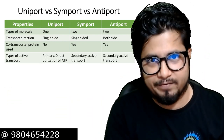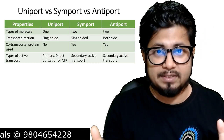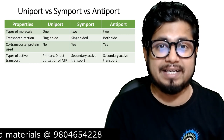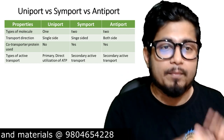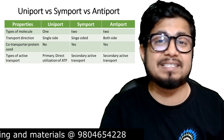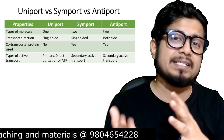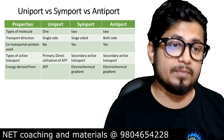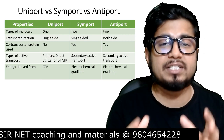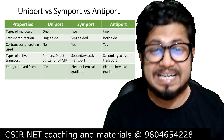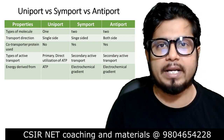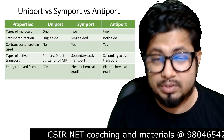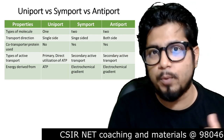Then comes the type of active transport. There are two types: primary and secondary. Uniport utilizes direct ATP, so it is under primary active transport. But symport and antiport utilize electrochemical gradient, so they are classified under secondary active transport. Energy for uniport is derived directly from ATP, while symport and antiport utilize electrochemical gradient to drive the molecules together or opposite to each other.